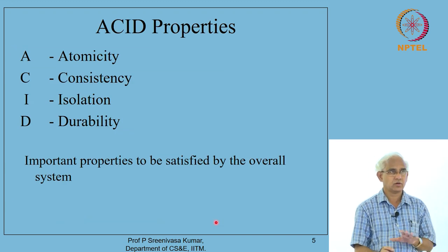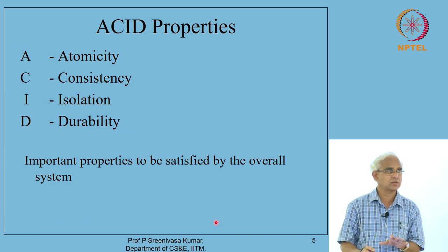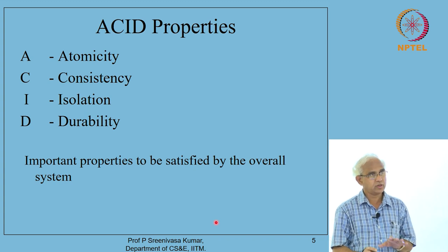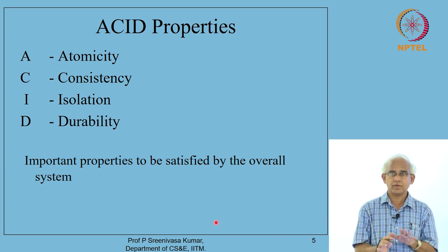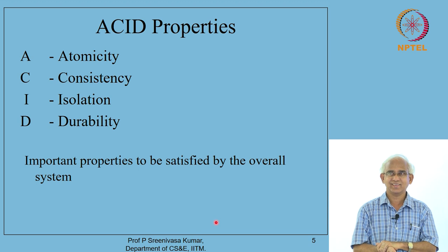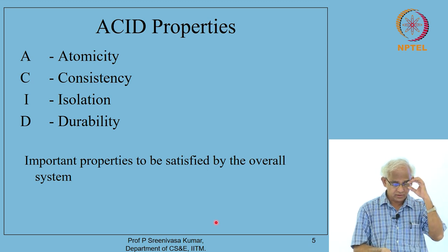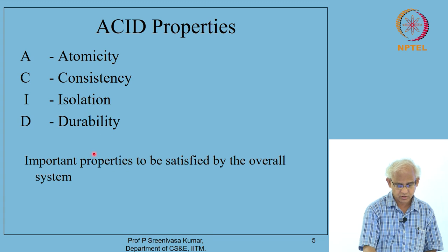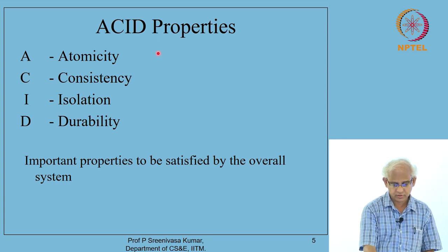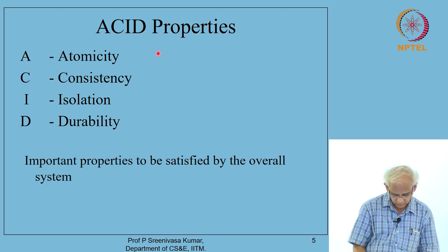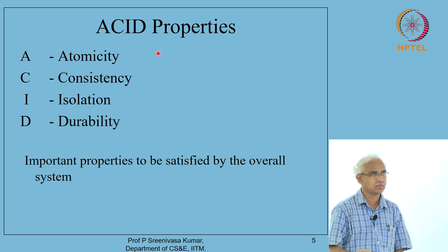It has to be done carefully — that is what we will examine in this particular module. In the context of a transaction processing system, we typically talk about four important properties. These are called ACID properties: Atomicity, Consistency, Isolation, and Durability. These are the four important properties that we talk about.